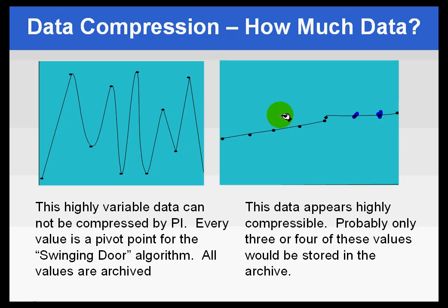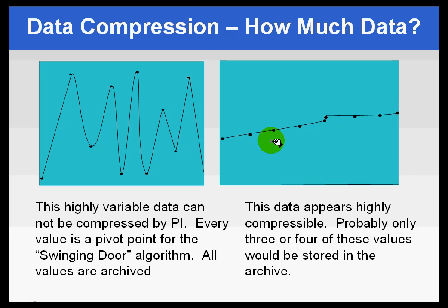And then for some reason we get a value that comes in after this value over here. If that happens, this value is going to go in without compression — we call that out-of-sequence data. All out-of-sequence data like that would be archived. It's rare that we see an interface that gets its data so out of order, but if it does, that data will be written without compression.